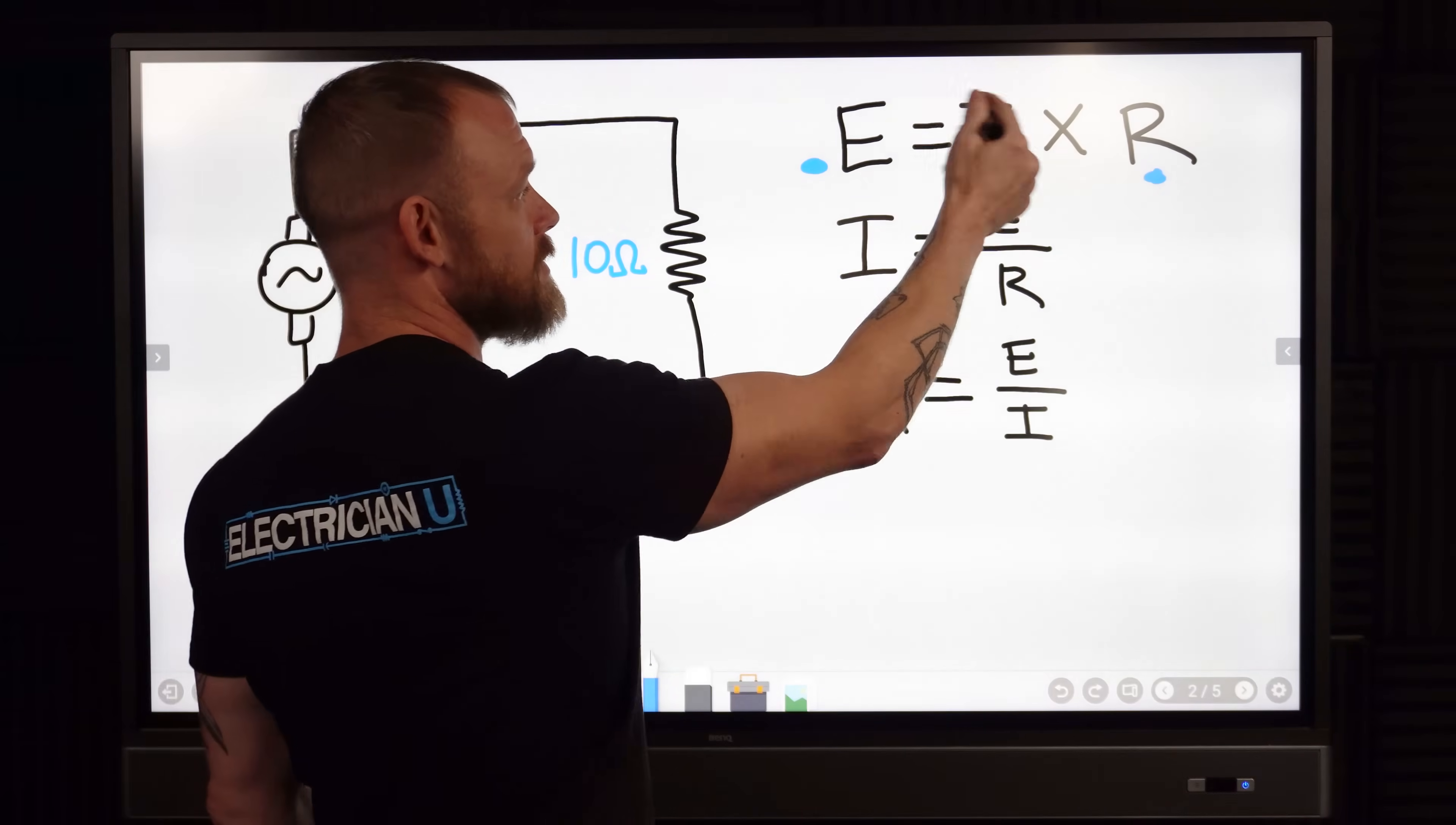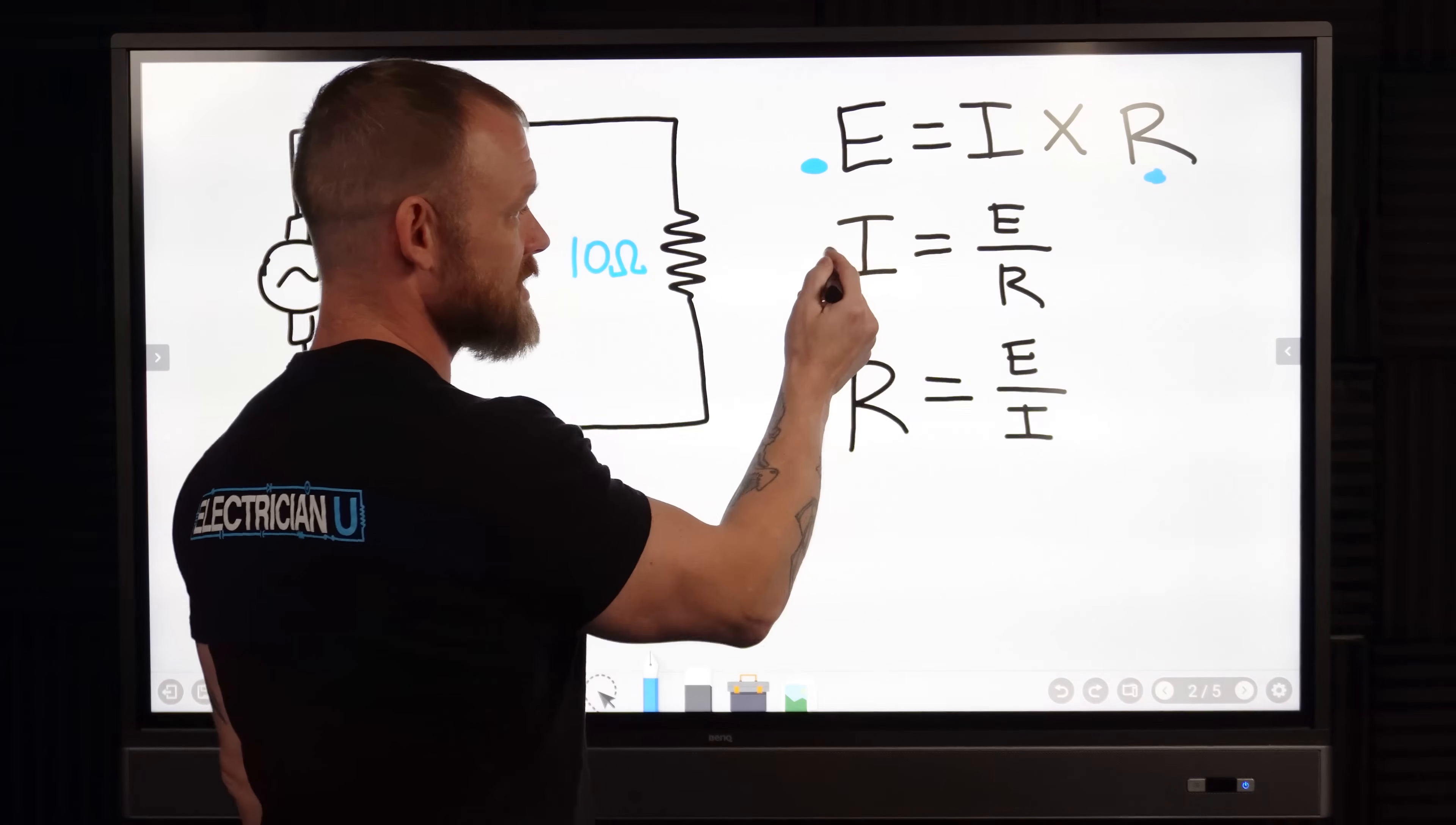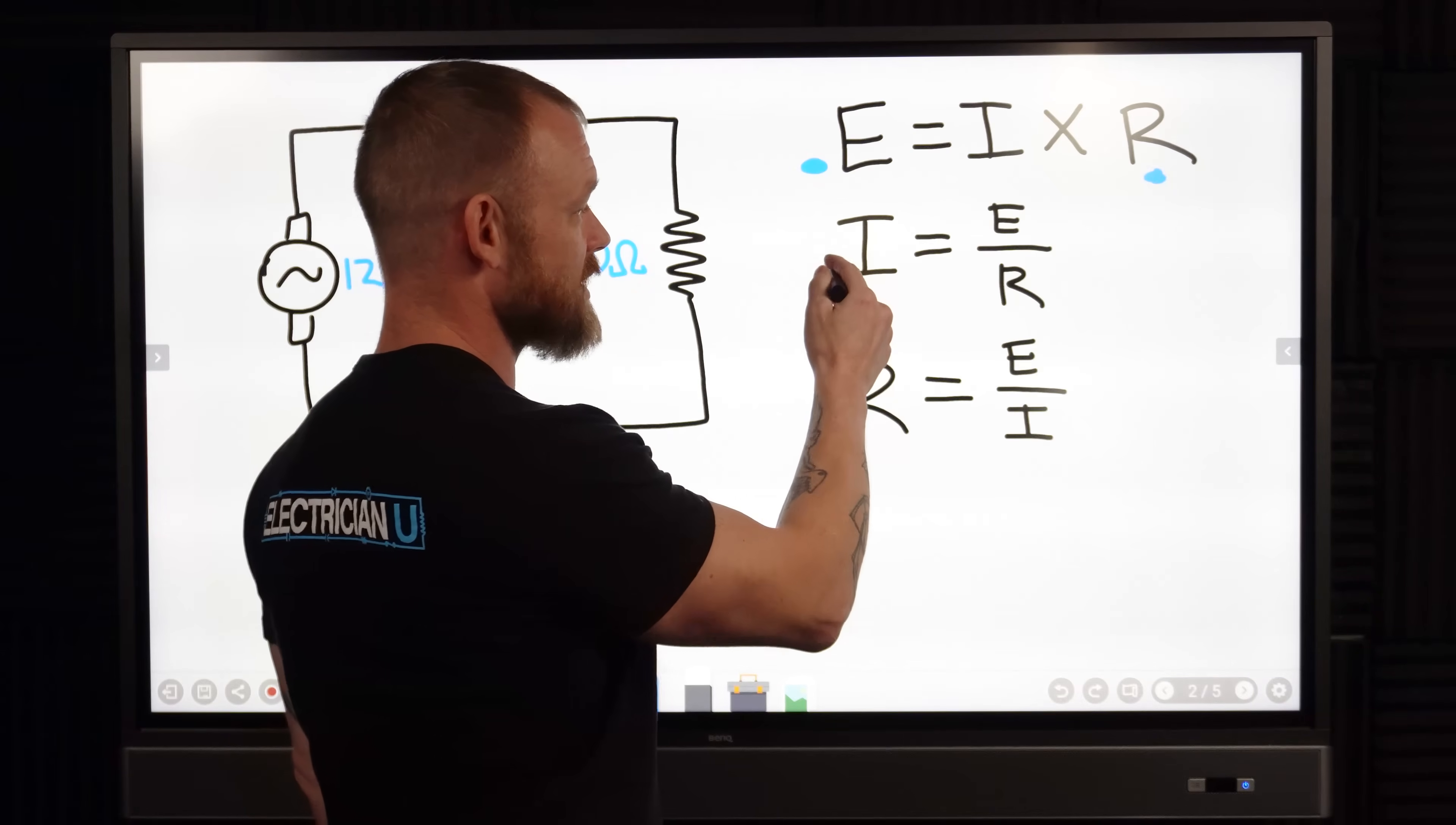So the only thing we don't have is I, so this wouldn't be the right equation to use. It's just more difficult because you got to move everything around. So you want to use this one, it leaves I by itself and you can use these two values.